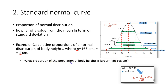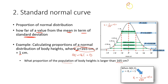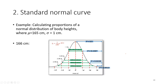First, we want to look for the population reporting height larger than 165. We need to know how much this value differs from the mean in terms of standard deviations. The difference between the value and the mean is 165 minus 165, which equals 0. So if we divide by any standard deviation, we get z=0. From the table, for z=0 the probability is 0.5.